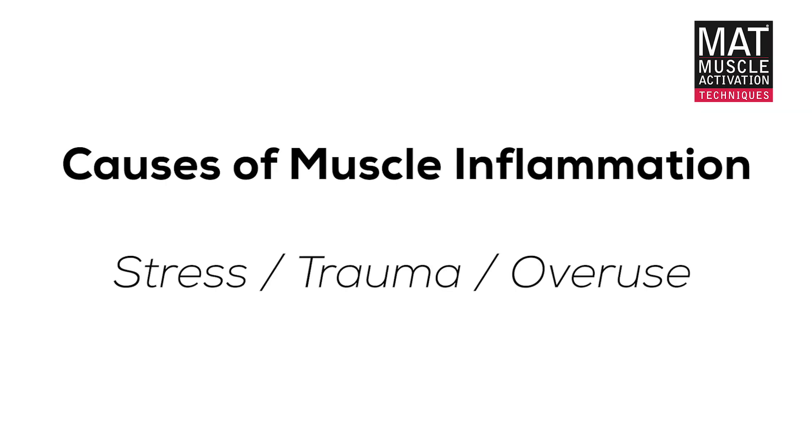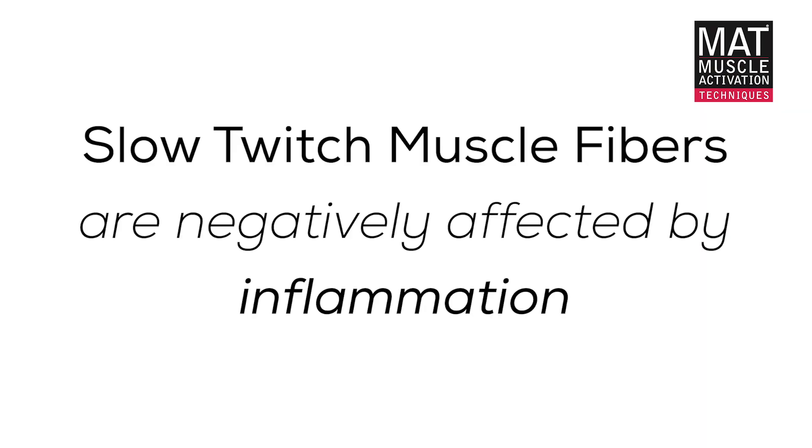In the ideal state, these motions and movements occur beyond our conscious control. Stress, trauma, and overuse result in inflammation, which alters the communication between the nervous system and the muscle system, and that in turn creates weakness. When looking at this weakness, it's actually the slow twitch muscle fibers that are negatively affected by inflammation.